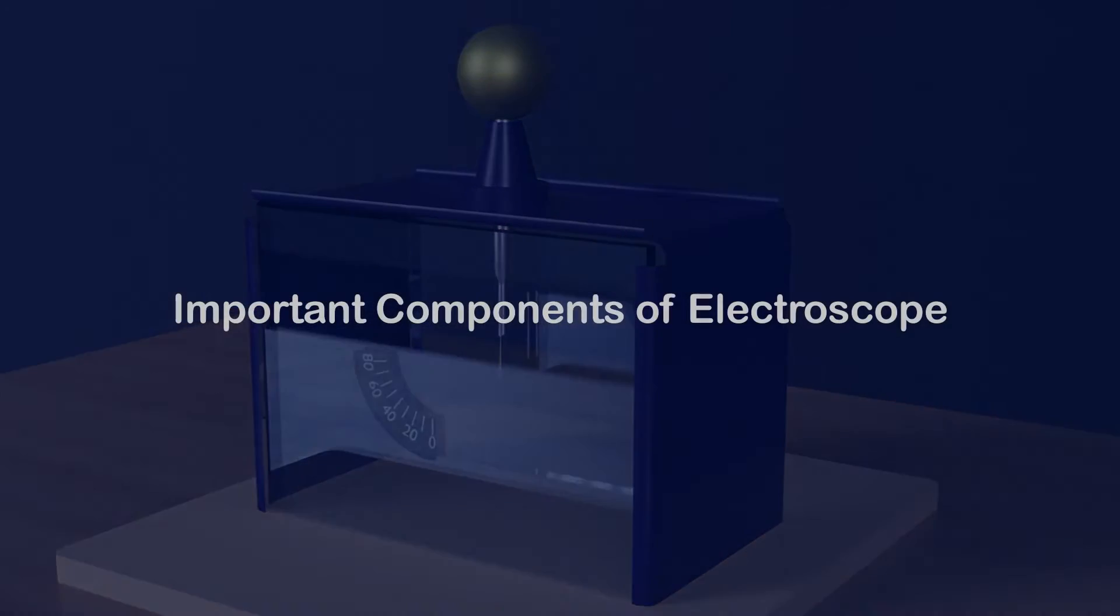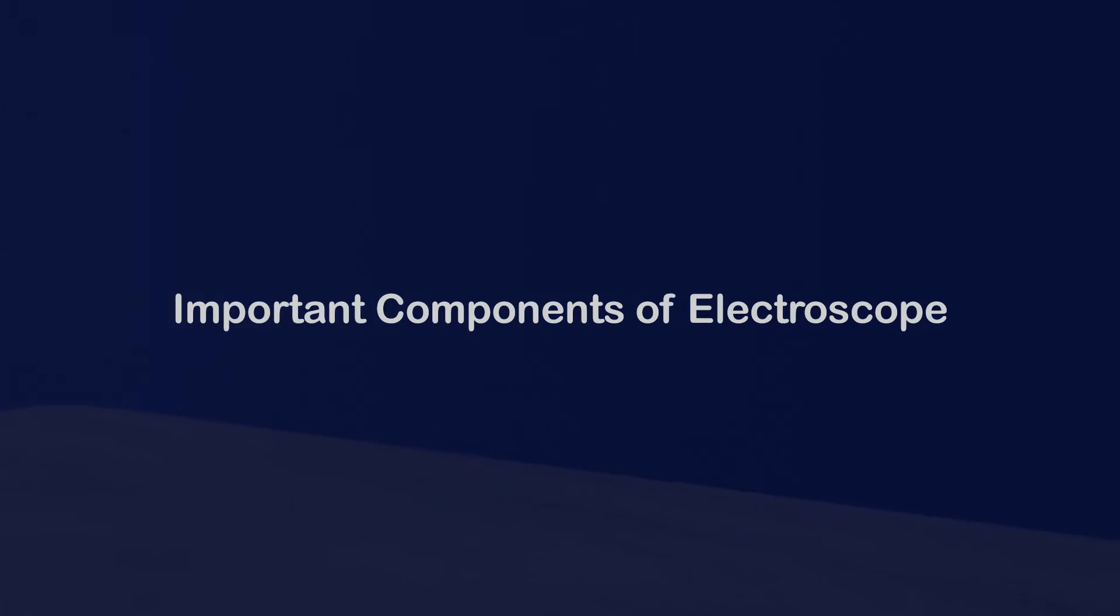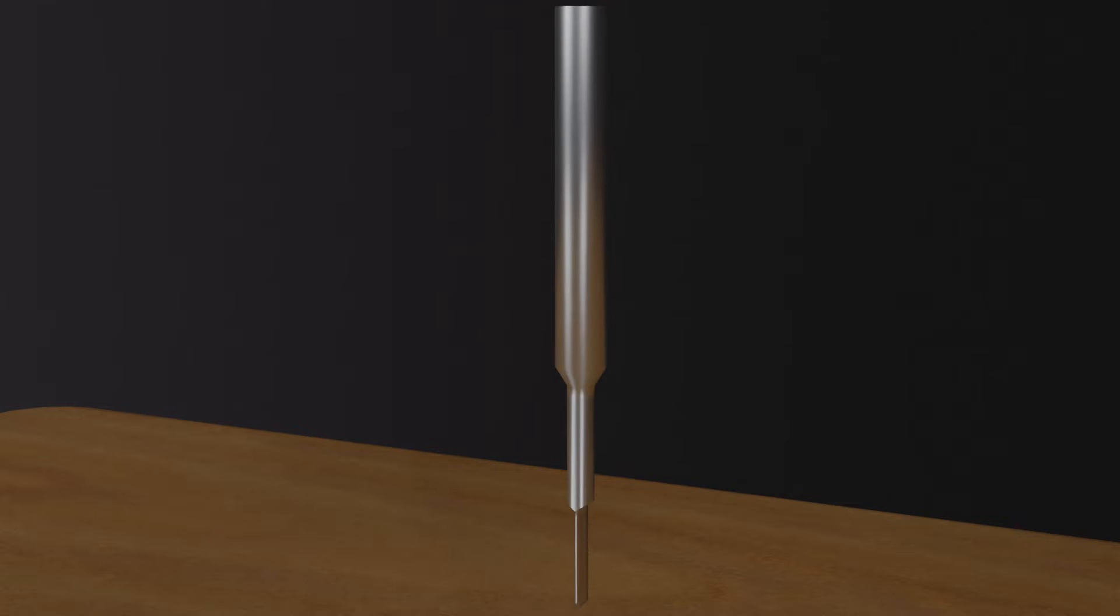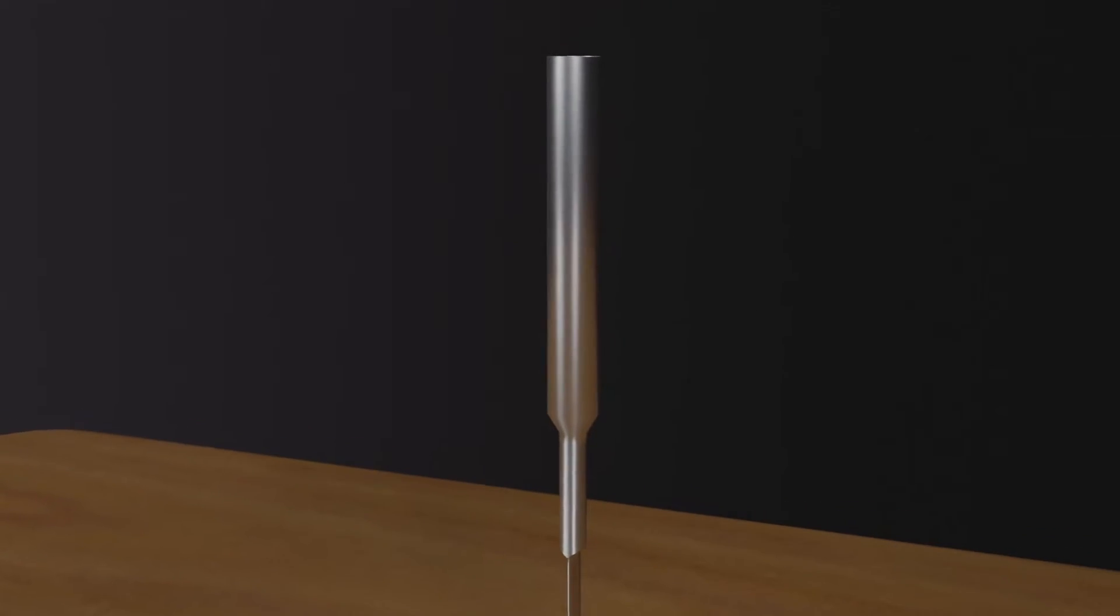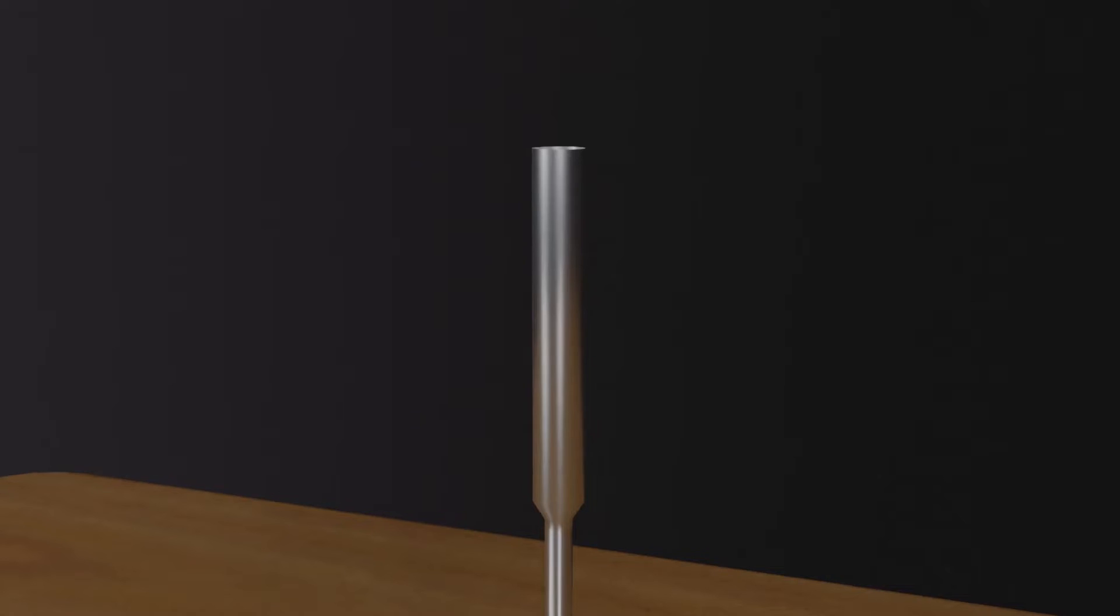Let's learn about the important components of an electroscope. First, there is the metal stem, which is usually a rod or wire made of a conductive material like copper or aluminum.